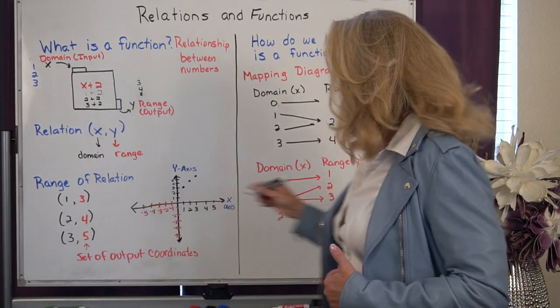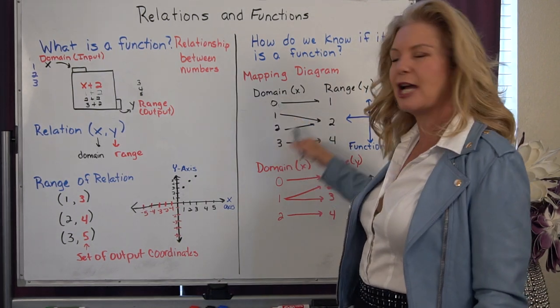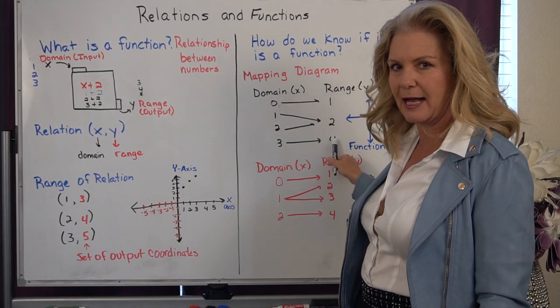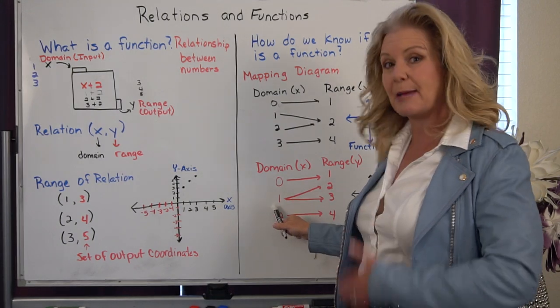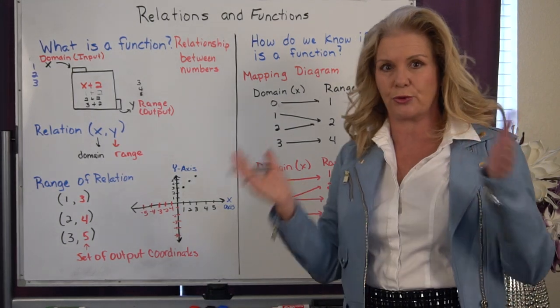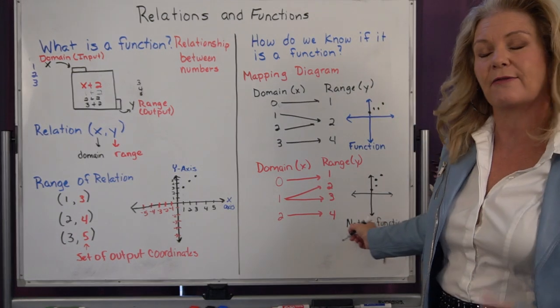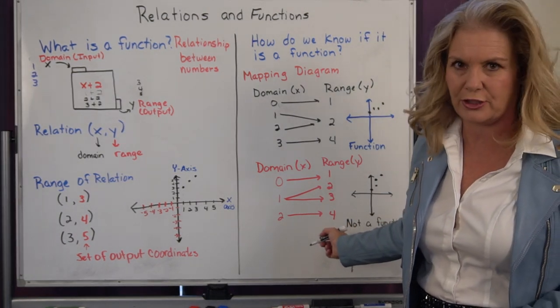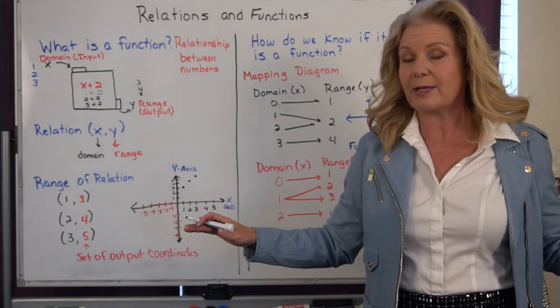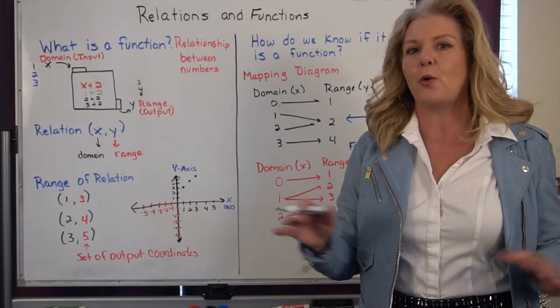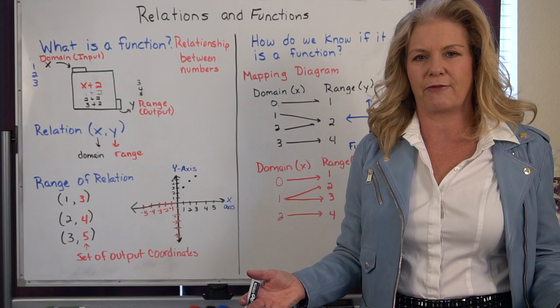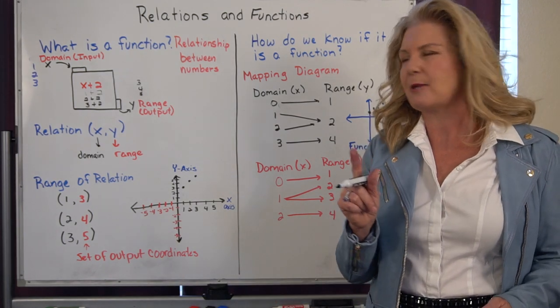So you always have to have whatever goes in a unique answer that comes out. You can never have the same number go in and have two different answers come out. So that would be an example of a relationship that is not a function. Not every number relationship is a function. Only certain relationships are functions.